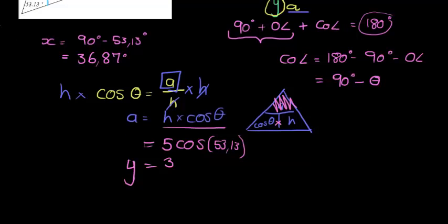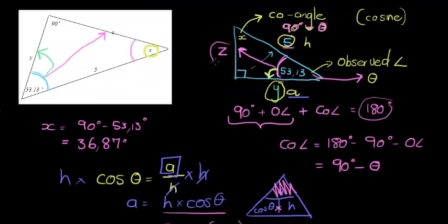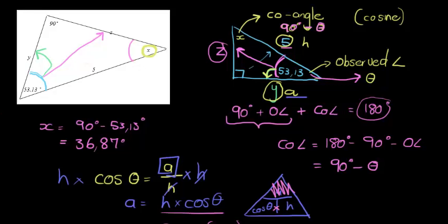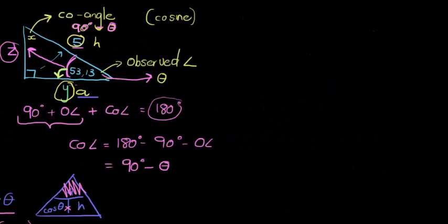And now what we need to calculate is the last value, z. Now, there's two ways of calculating z. You can either use the fact that it's opposite the observed angle, and since we have the hypotenuse, we can use opposite over hypotenuse, that's sine, or we can use Pythagoras. Pythagoras is a beautiful way. So in Pythagoras, we know that the hypotenuse squared